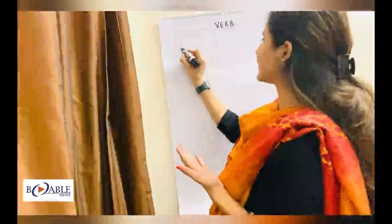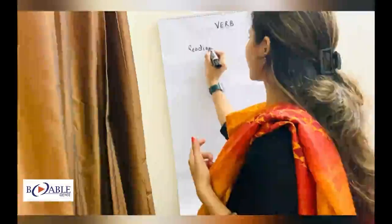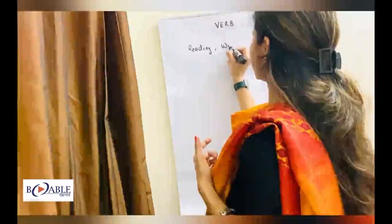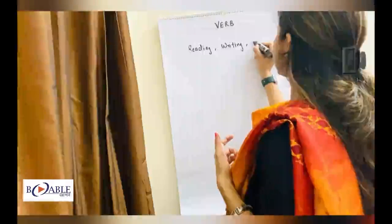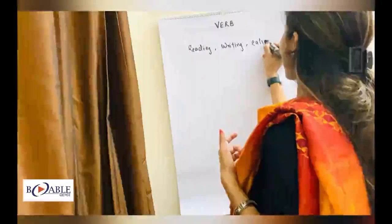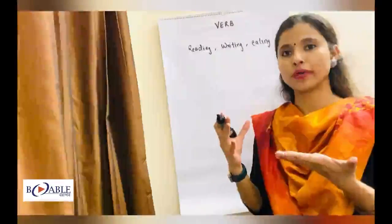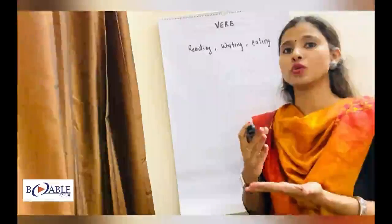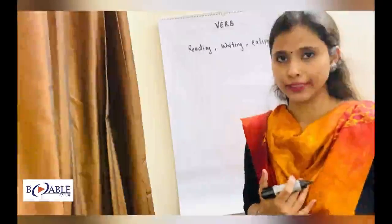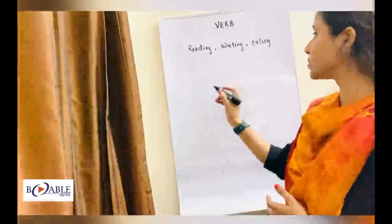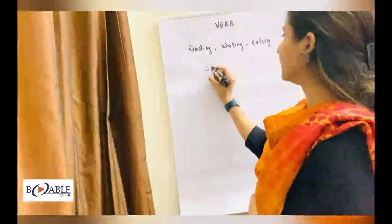So, the word examples — reading, writing, eating — these are actions, okay? This is the simple definition: the words that describe your actions we call them verb. My second part is subject-verb agreement.